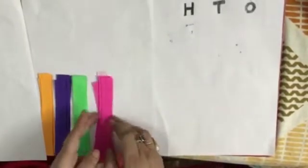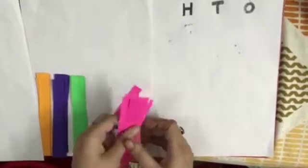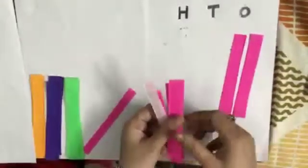For 3 ones, we will put 3 pink strips in the ones column: 1, 2, 3.